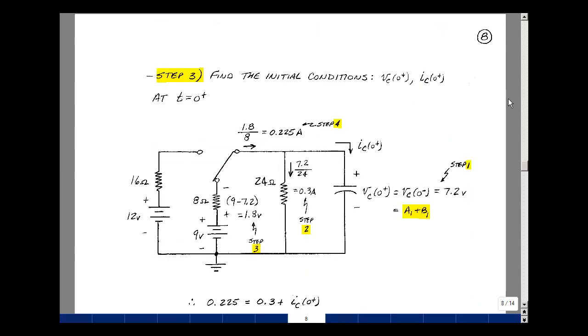Step three of our algorithm is to find the initial conditions. That would be the value of V sub C and I sub C at t equals t zero equal to zero plus. So our switch is going to go from this position to this position. The voltage across the capacitor prior to the switch switching was 7.2 volts. And the voltage across the capacitor cannot change instantaneously. It's the same value. That's also what we're solving for. So that's going to be A1 plus B1 times e to the minus zero, which is just equal to one. So just A1 plus B1.